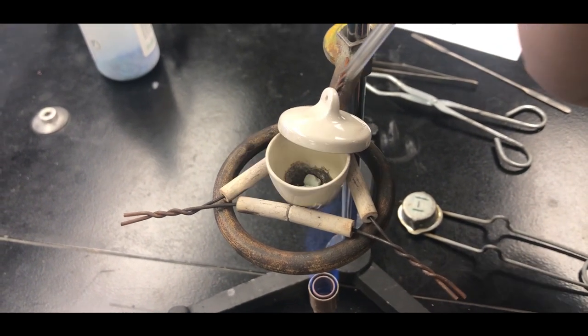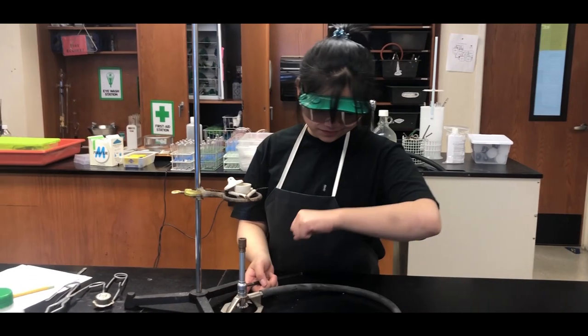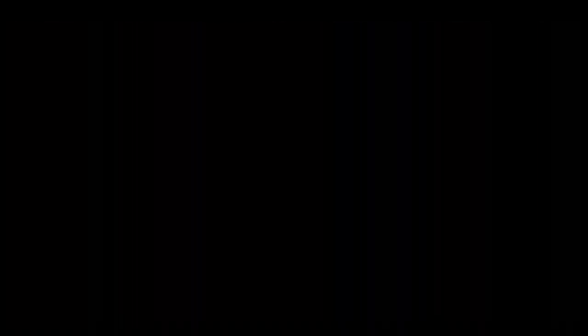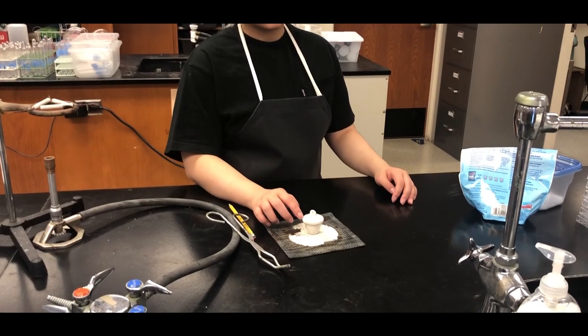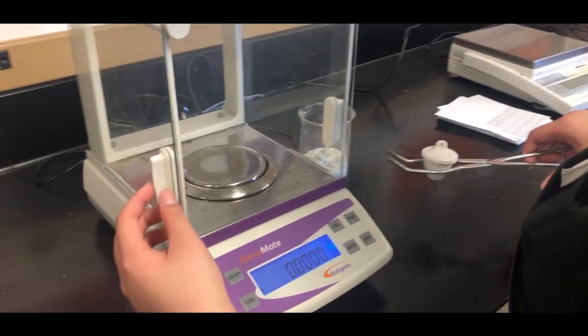Step 6, reheat the anhydrate. Follow the procedure of step 4 and 5, but this time, heat the compound for 5 minutes. 5 minutes later, measure and record the mass of the anhydrate after it cools down.